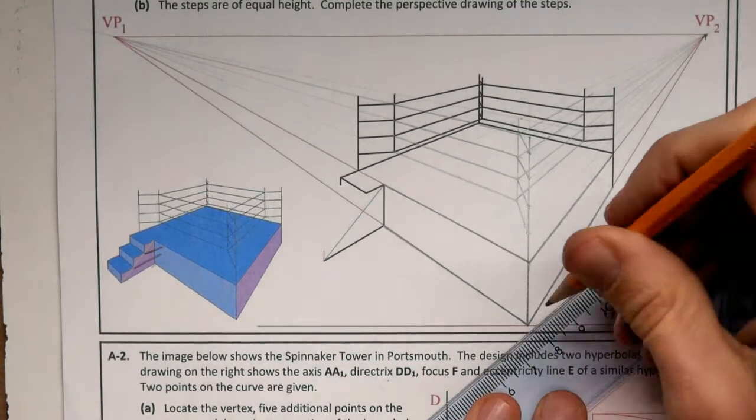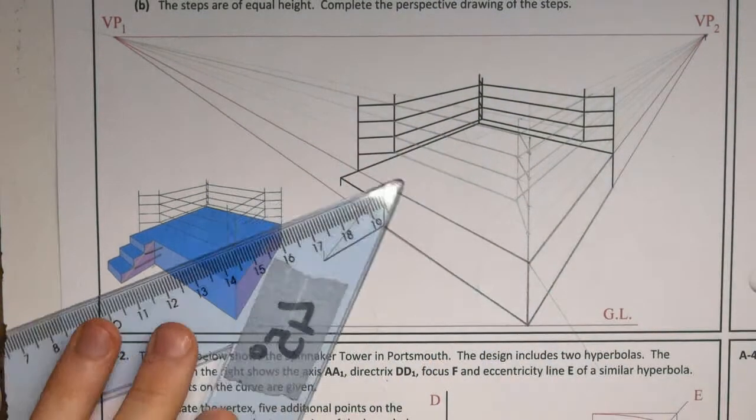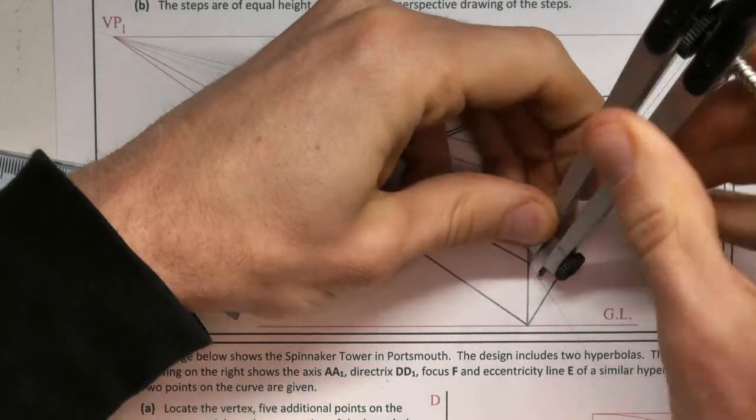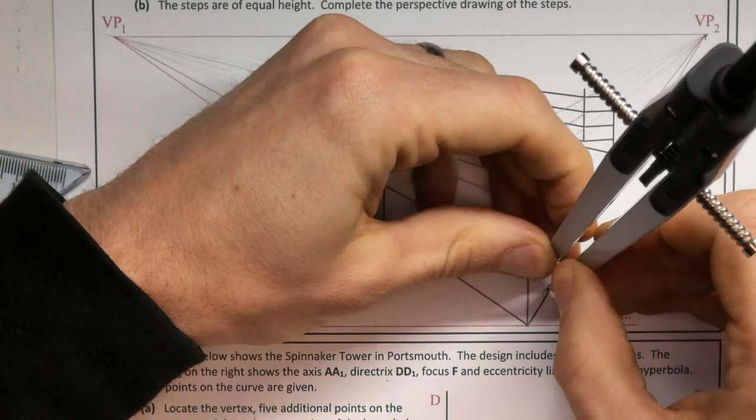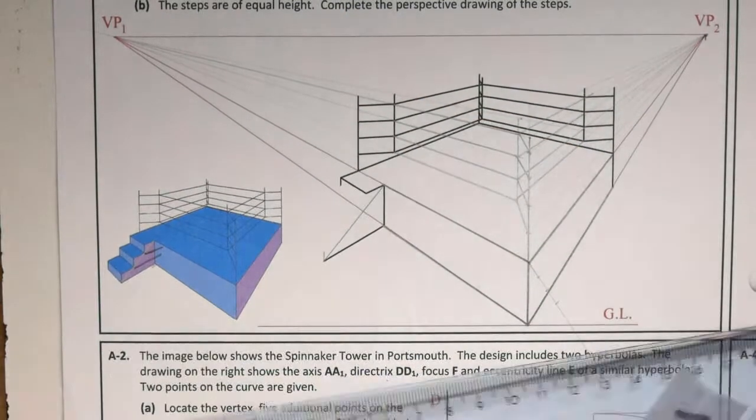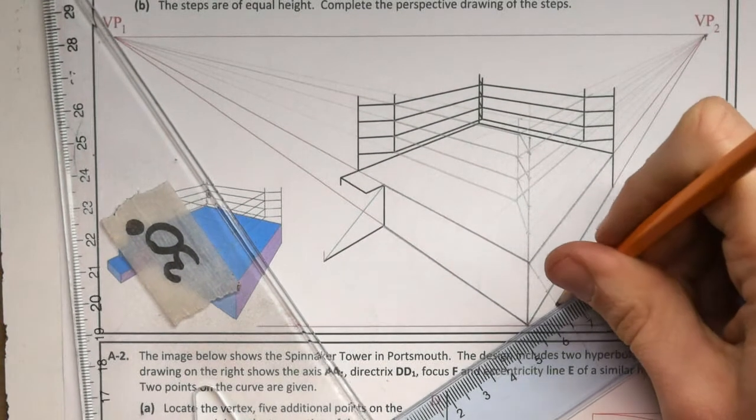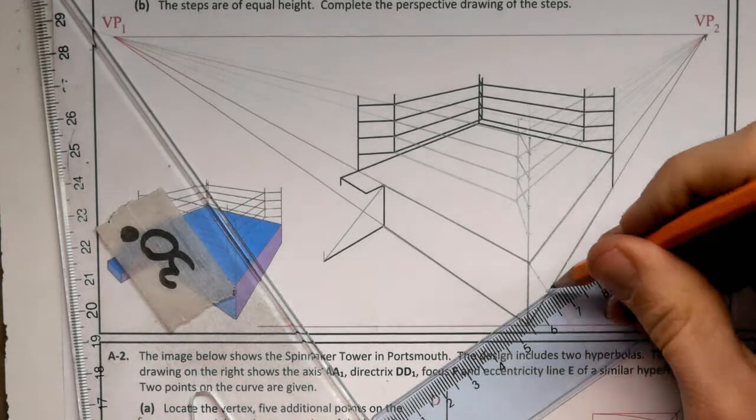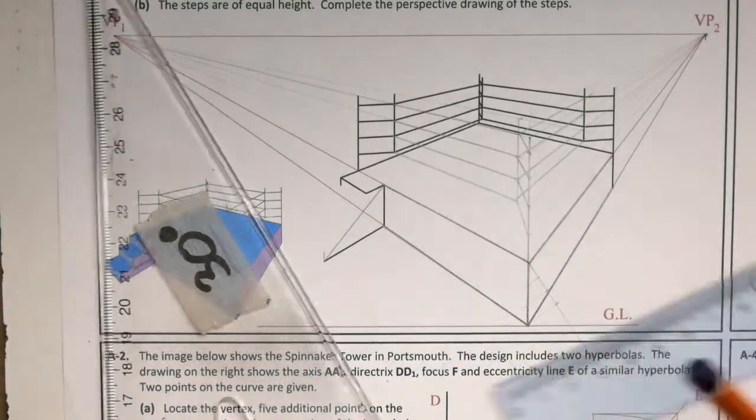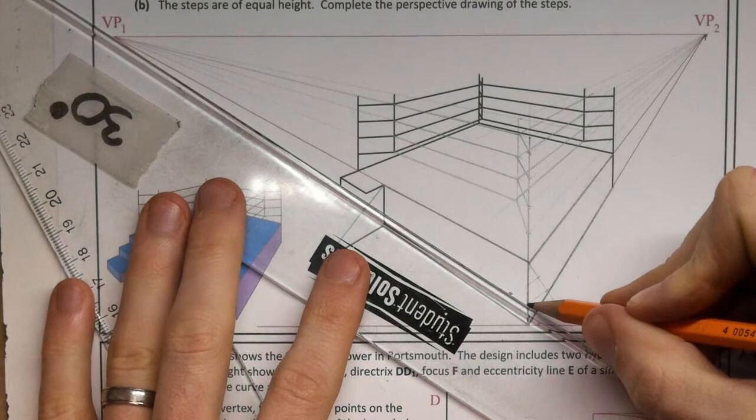Draw in at any angle. So I'm going to do it this direction. Step off three times. Once, twice, three times. Slide and set. That is that height divided in three, and now I can vanish that back to VP1.